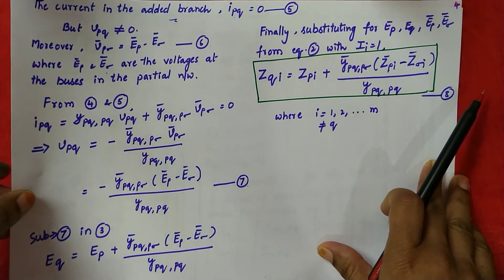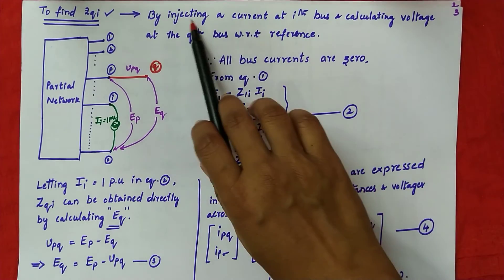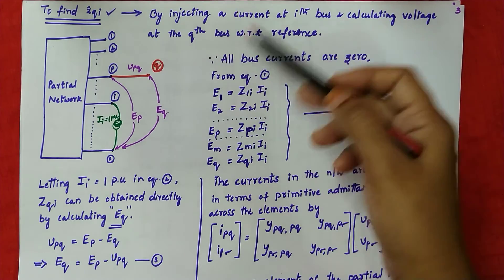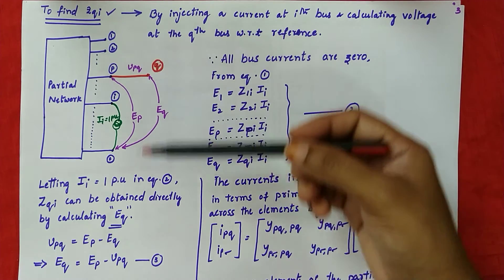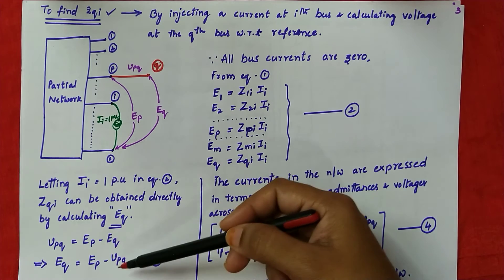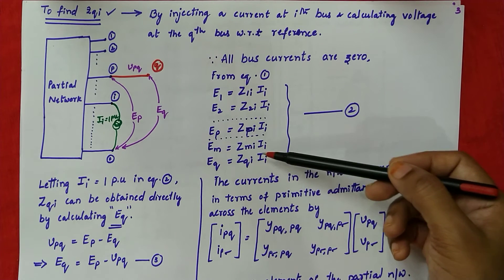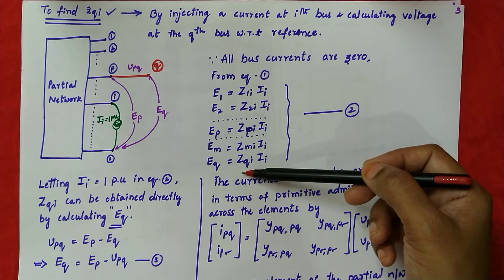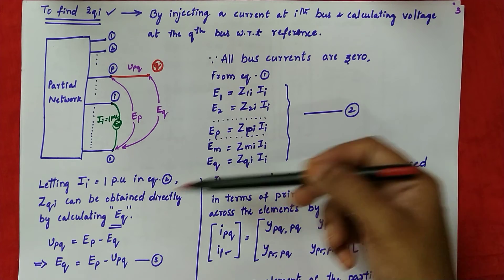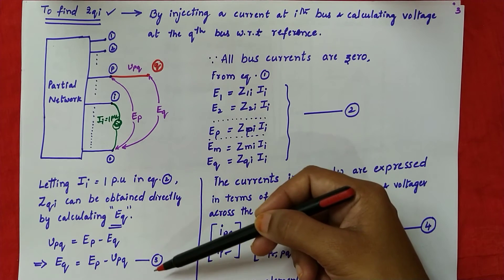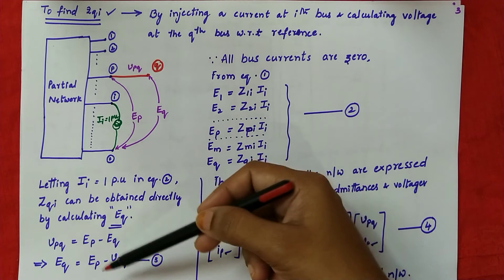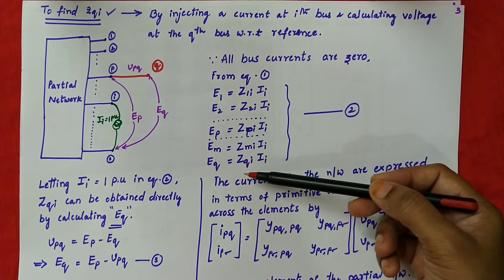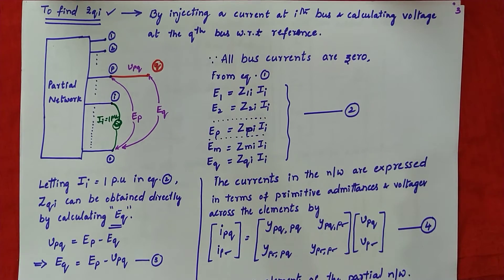By injecting a current at the ith bus and calculating the voltage at the Qth bus, we can find Z_Qi. Since I_a is 1 per unit, Z_Qi is simply E_Q. To calculate E_Q from the third equation, we need the relation for V_PQ, which we derived. So we got the relation for E_Q, and that E_Q is nothing but Z_Qi. In this way, we can find off-diagonal elements.